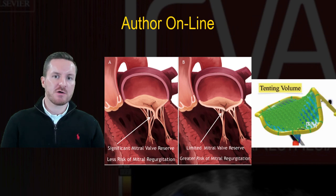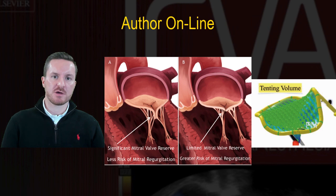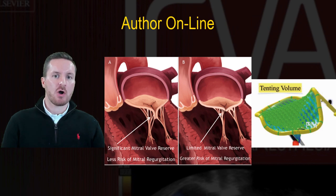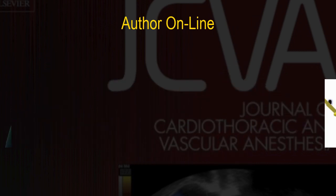Our study highlights that by using tenting volume as a surrogate for reduction in coaptation area, we could track these valves into the future, possibly intervene at an earlier stage, and potentially lead to improved patient outcomes.